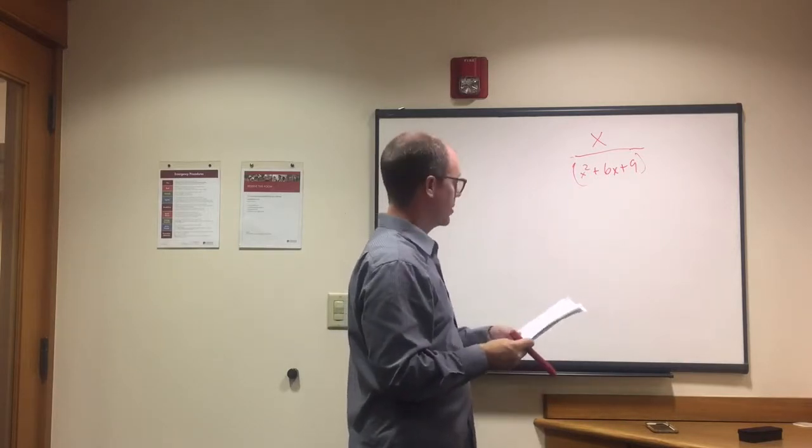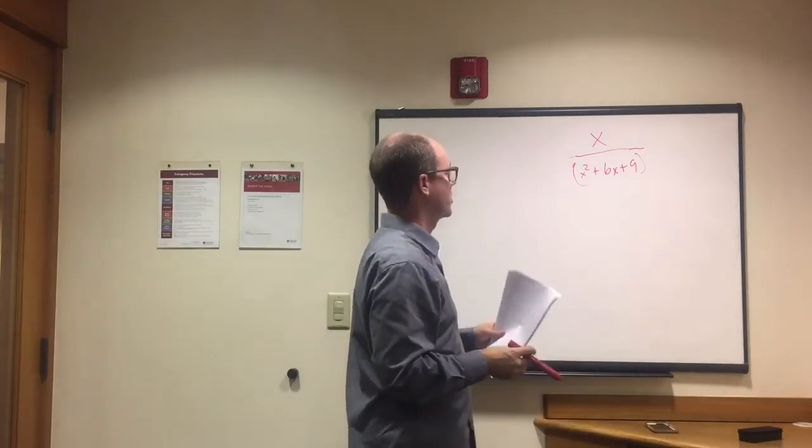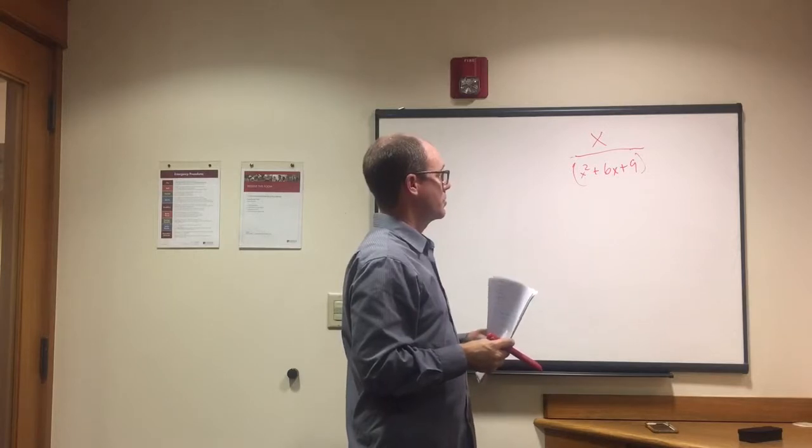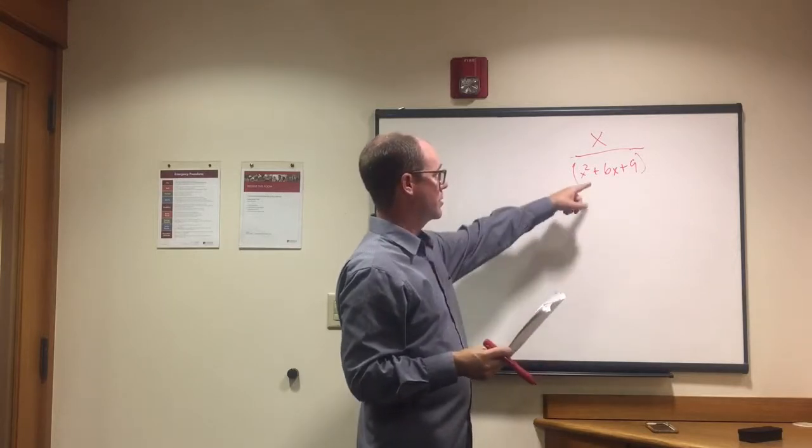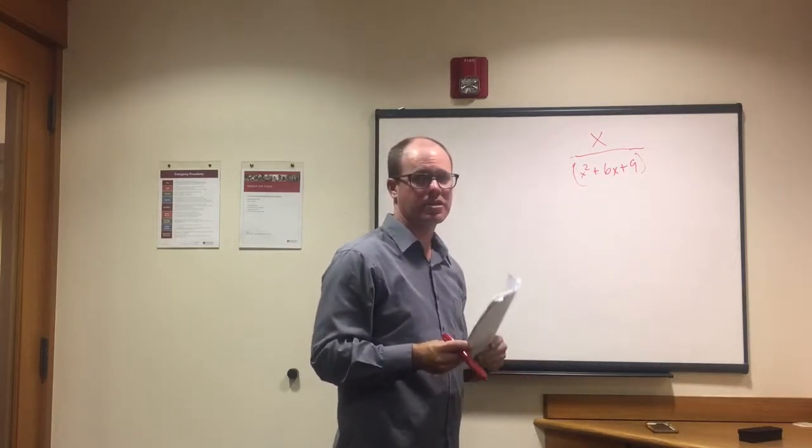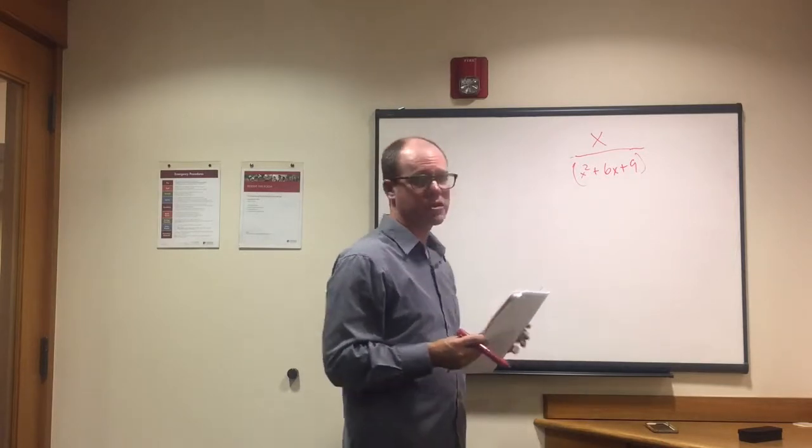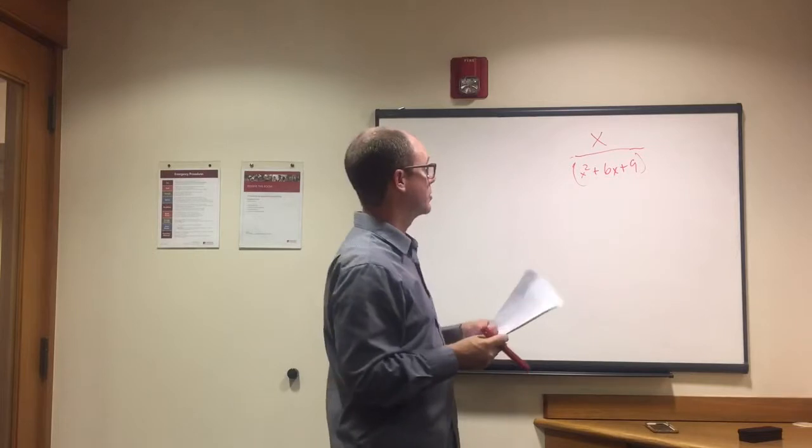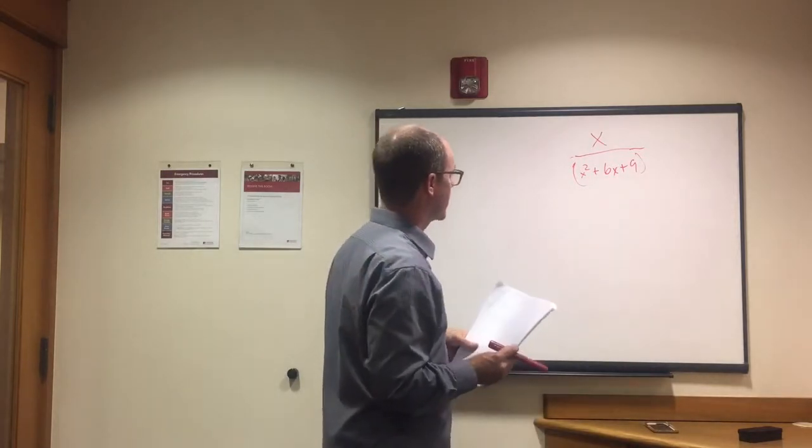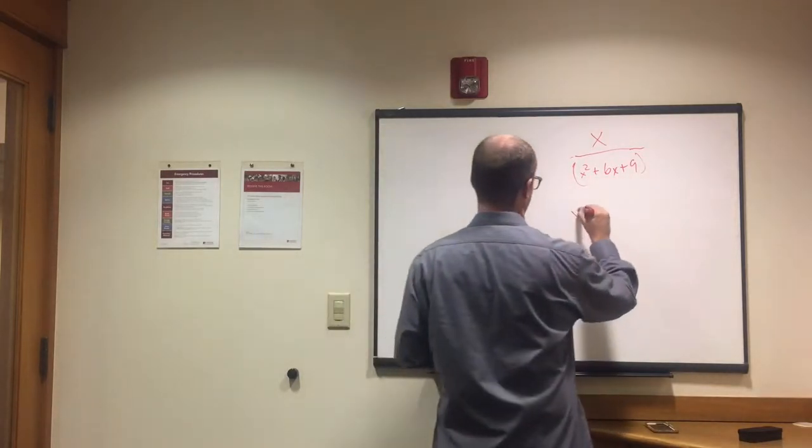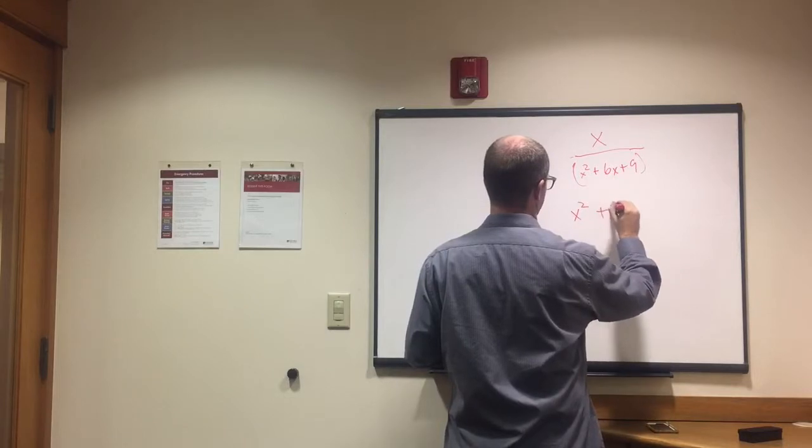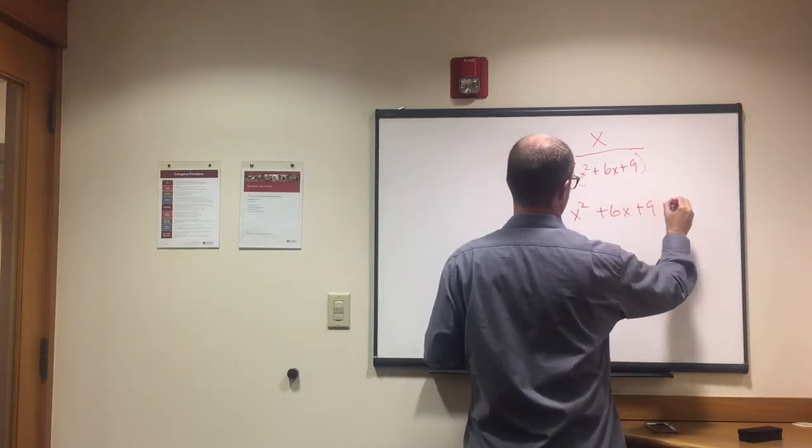The denominator in something like this can't equal 0. Once the denominator equals 0, we don't have a real problem here. So what we need to do is be able to factor this. So you're setting x squared plus 6x plus 9 equal to 0.